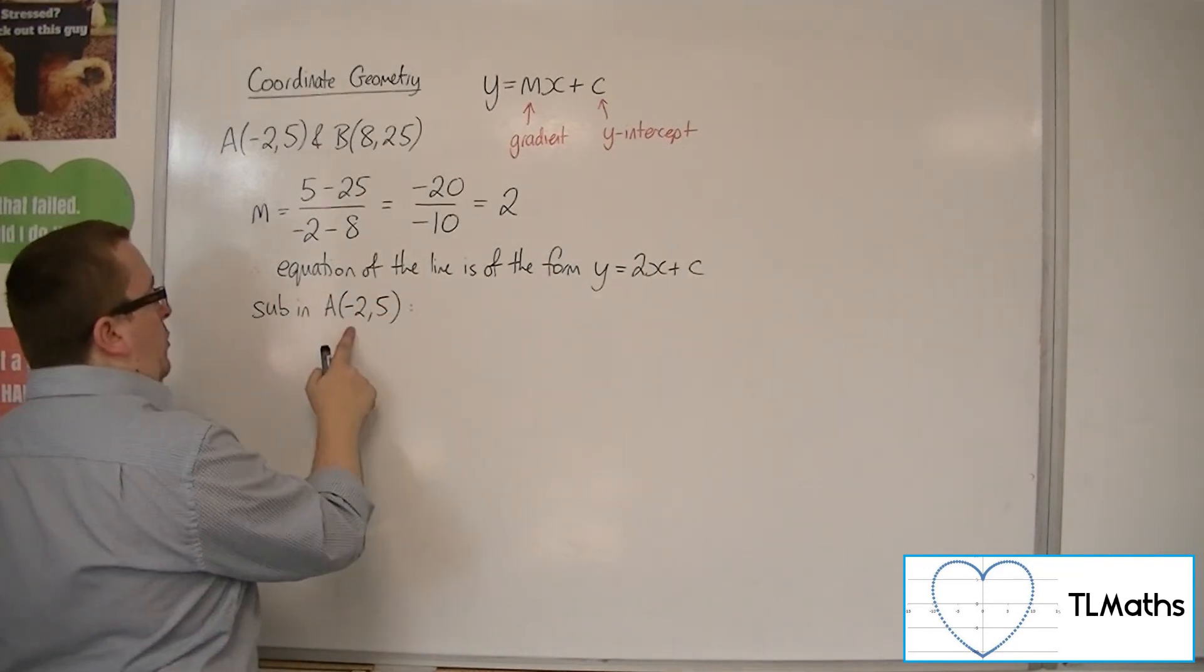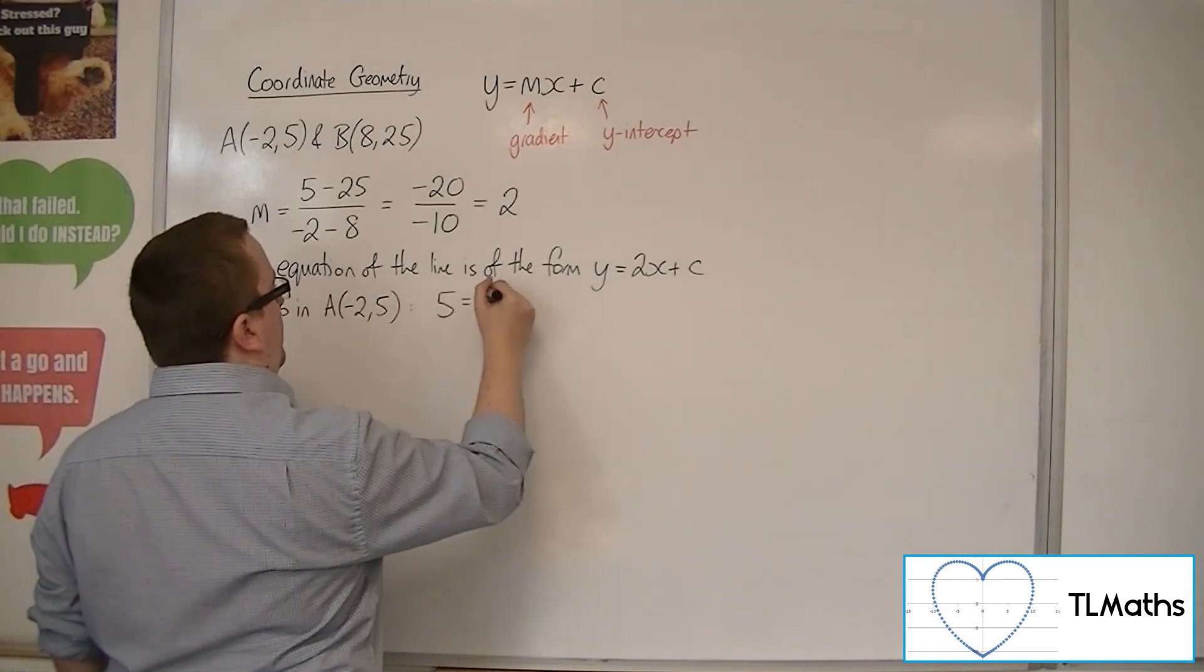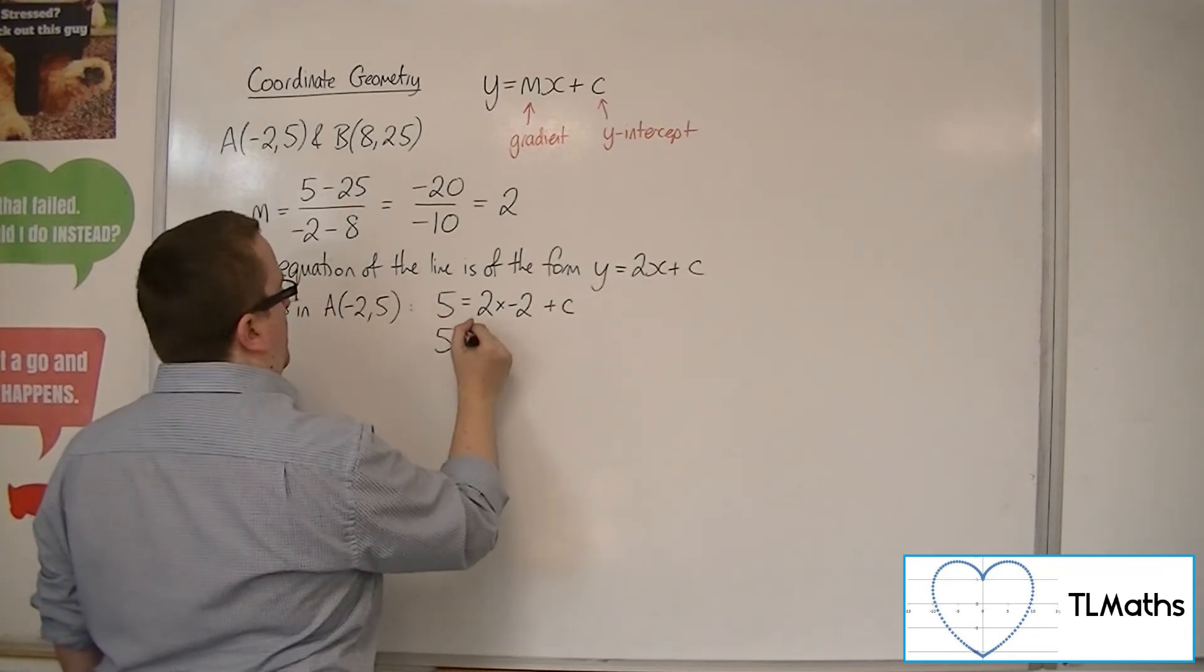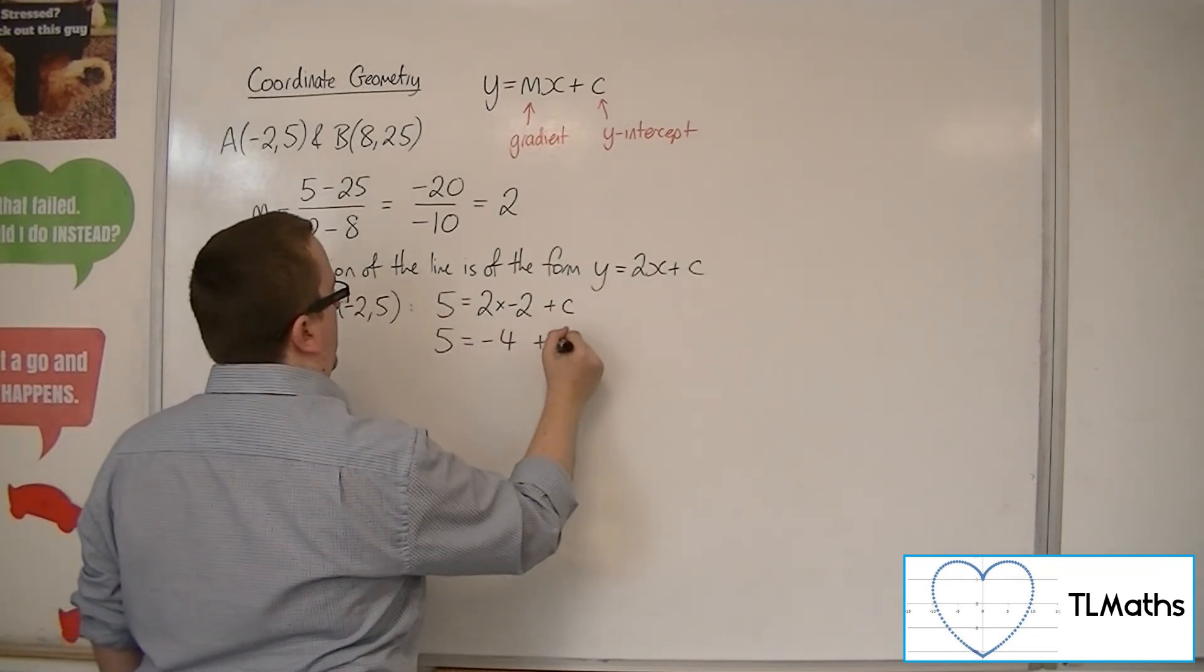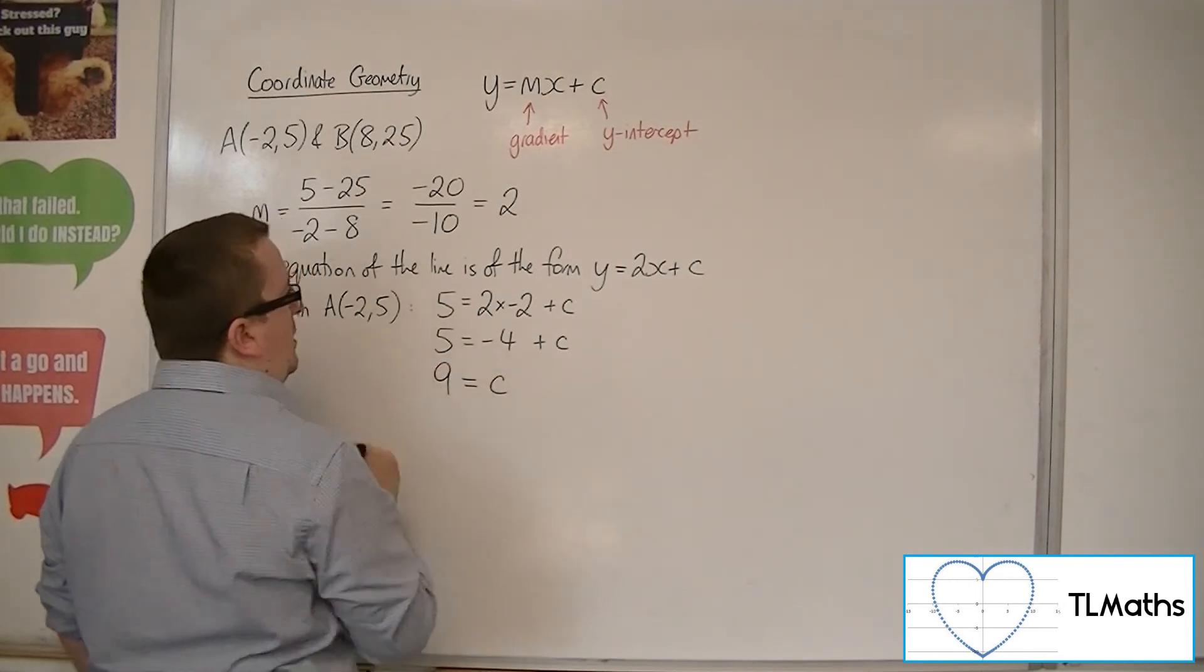So I'm going to choose to sub in a. The x-coordinate is minus 2, the y-coordinate is 5. So we have 5 is equal to 2 lots of minus 2 plus c. So 5 is equal to minus 4 plus c. Add the 4 to both sides, and so c must be 9.